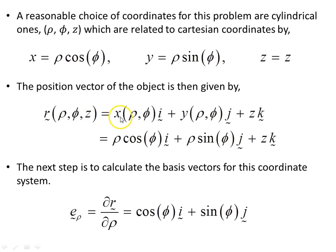So the position vector here, R will be this object here. Now the next step is to calculate the basis vectors for this coordinate system, so that we can work out eventually the metric for this space. So E subscript rho, because there's three variables, rho, phi and z.